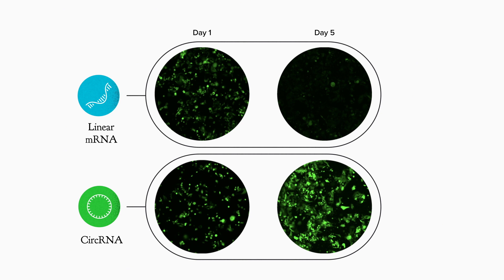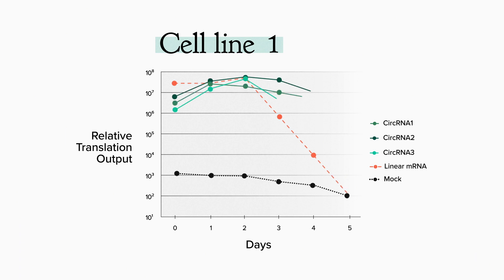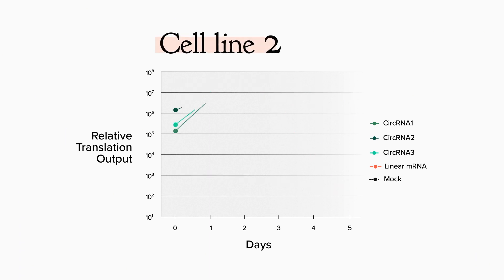Here's some data to make that point. These cells were transfected with equal amounts of RNA expressing GFP, either conventional mRNA or circular. The GFP expression is similar on day one, but only the circular RNA keeps expressing on day five. Here's a quantitative measurement using a high-turnover luciferase. The linear RNA construct starts strong but decays by day three. The circular RNA starts off a little lower, but it's still going after five days. And this was true for three different sequence variations of the circular RNA and for two different cell lines.